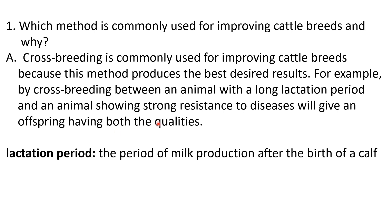By cross breeding between an animal with a long lactation period and another animal showing strong resistance to disease, you choose one male and one female — one having a long lactation period and the other having strong resistance to disease. The offspring will have both these desirable qualities. This is the benefit of cross breeding: you get the best desired results from both the male and the female.